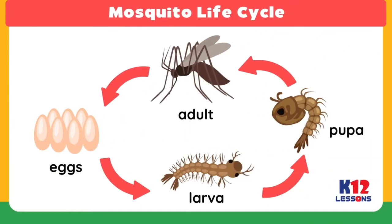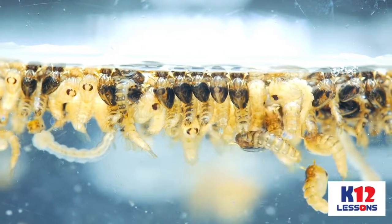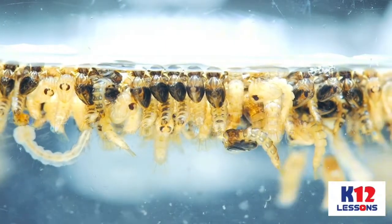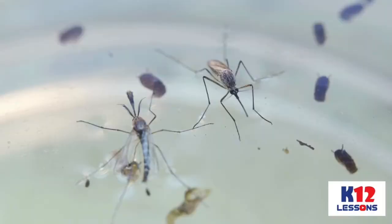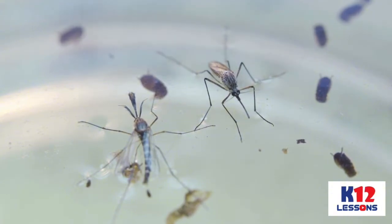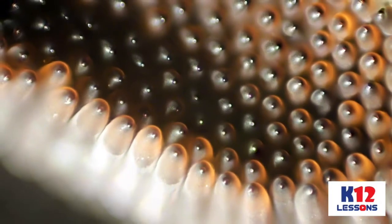The entire life cycle, from an egg to an adult, takes approximately 8 to 10 days. Pupae develop into adult flying mosquitoes in 2 to 3 days. Female mosquitoes lay eggs inside containers holding water. Eggs are ready to hatch from a few days to several months after being laid.